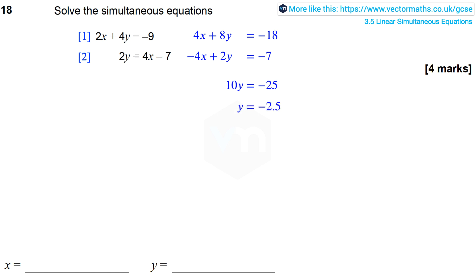Now to get the value of x I can substitute for y into either of the equations. Here I've decided to substitute for y into equation 1. 2x minus 10 equals minus 9, because don't forget that if y is minus 2.5, 4y will be minus 10. Therefore 2x equals 1 if I add 10 to each side, and therefore x equals 0.5.